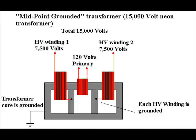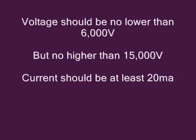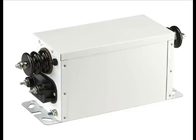Whatever transformer you decide to use, you will need one that can supply between 6,000 volts to 15,000 volts and a current of at least 20 milliamps, and it must also be current limited, or you'll have to use an external resistance to limit the current. You don't want a voltage any lower than 6,000 volts or any higher than 15,000 volts, because a spark gap will be very hard to adjust and won't fire correctly. Check your transformer and see whether it's endpoint grounded or midpoint grounded, because this will determine how you will connect the circuit for the Tesla coil.